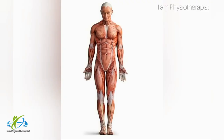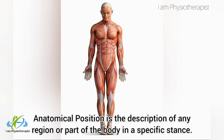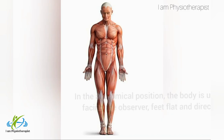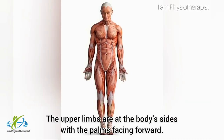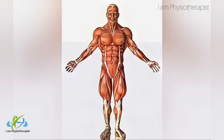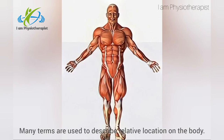Anatomical position is the description of any region or part of the body in a specific stance. In the anatomical position, the body is upright, directly facing the observer, feet flat and directed forward, and the upper limbs are at the body's sides with the palms facing forward.